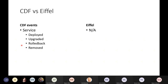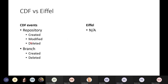Diving into areas that don't really have any correspondence: for example, there is a service category — a service is deployed, upgraded, rolled back, and removed. These are events we don't have in the current core Eiffel parts. There are also other specific events: repository created, modified, and deleted; and branch created and deleted. So maybe you could model a direct commit with these, but that's what we have currently here.